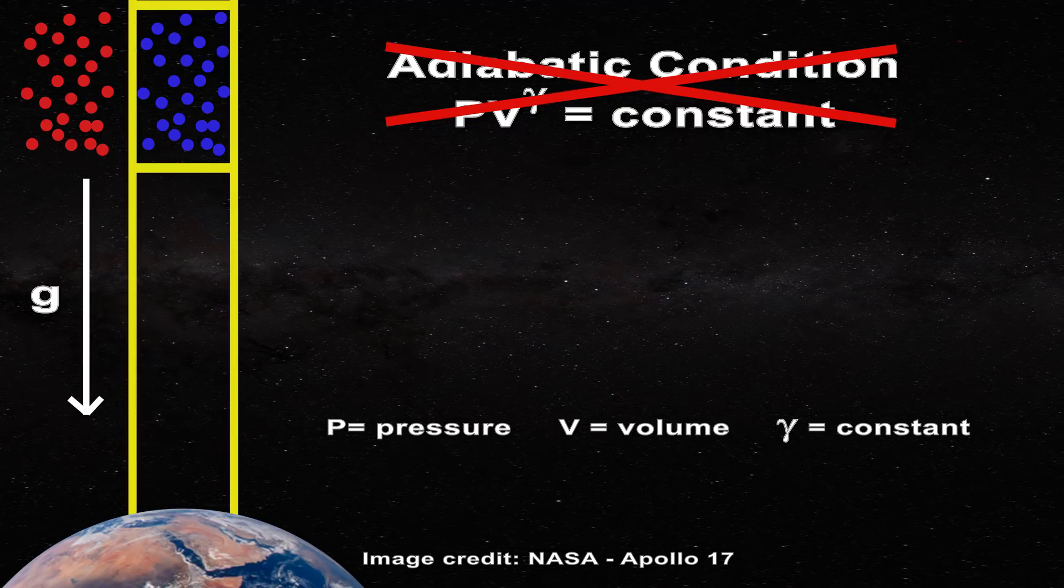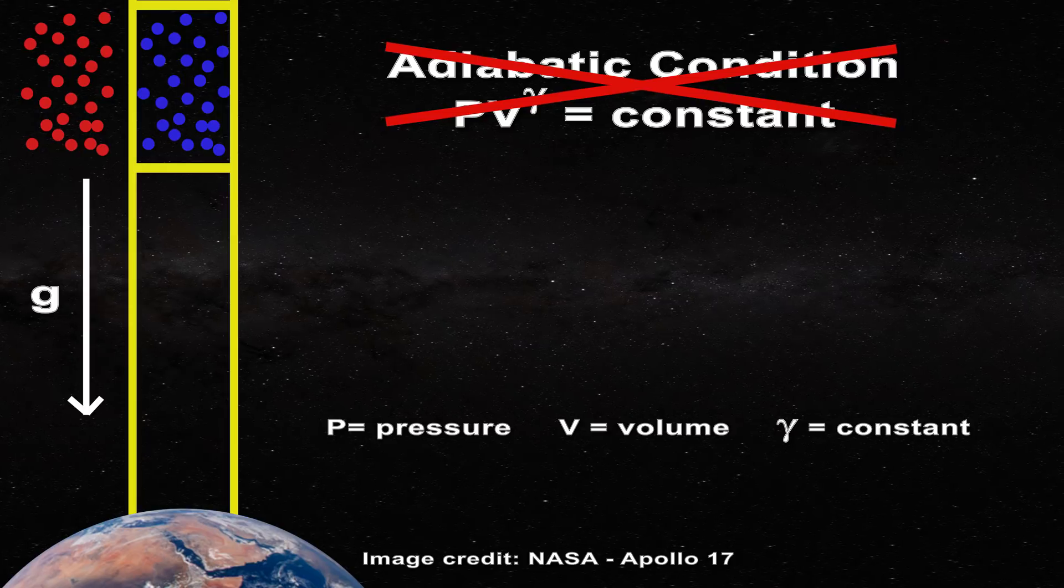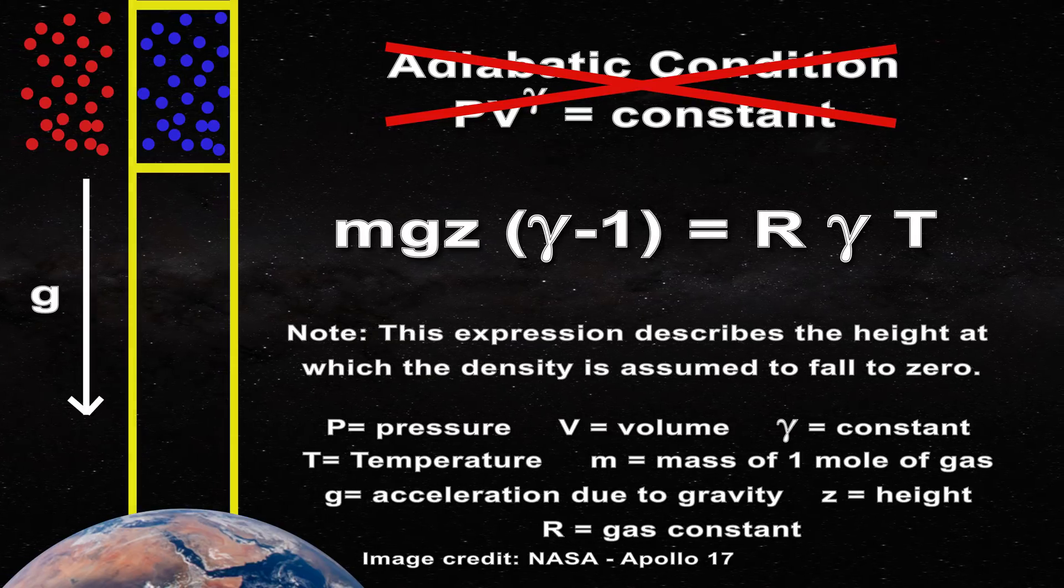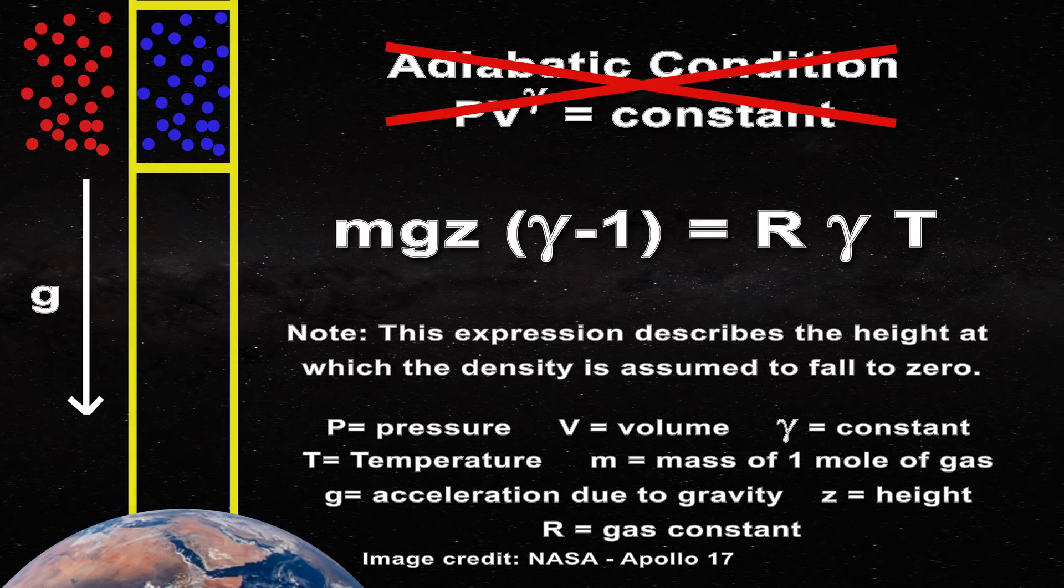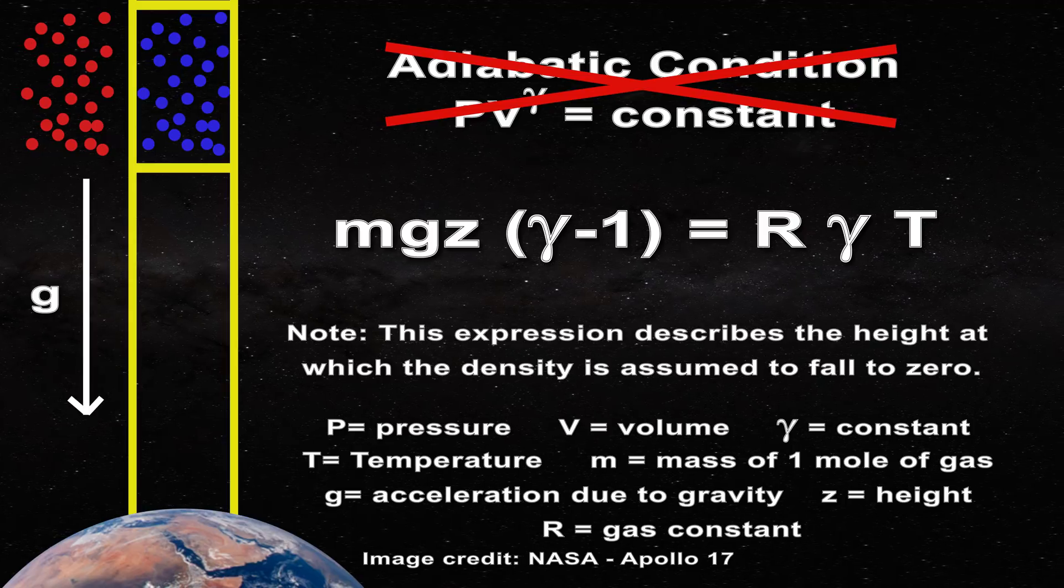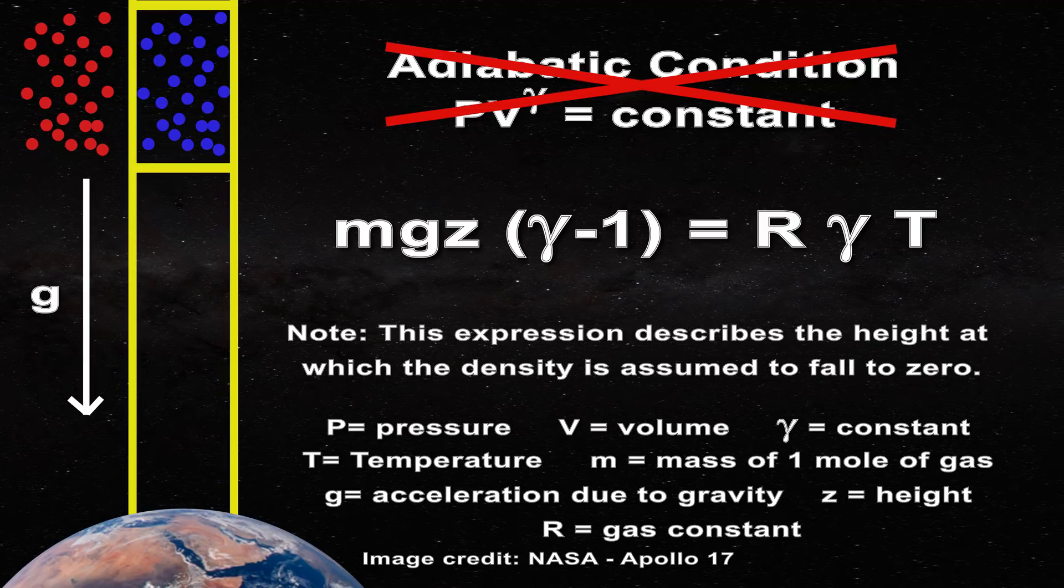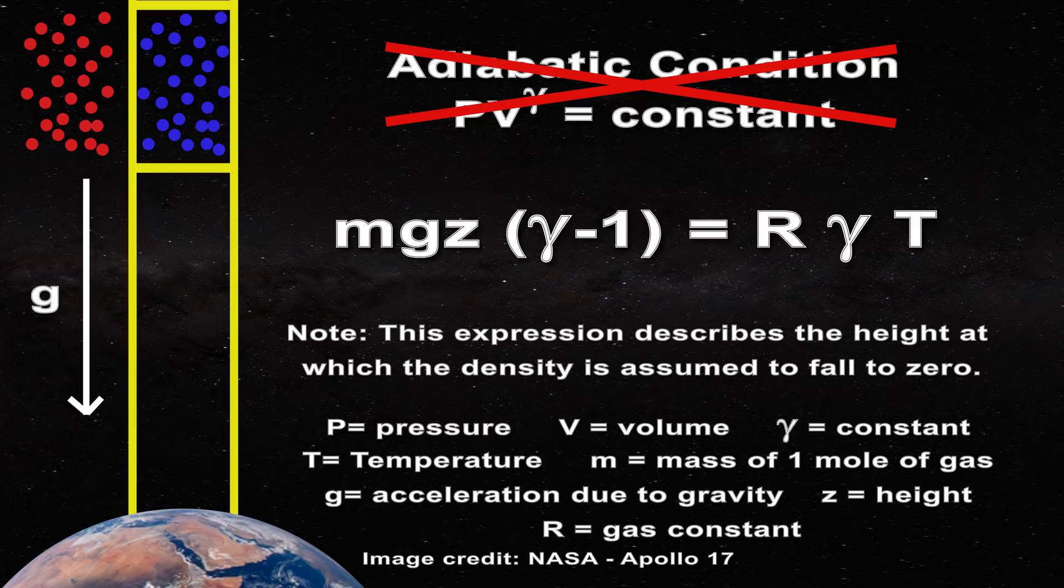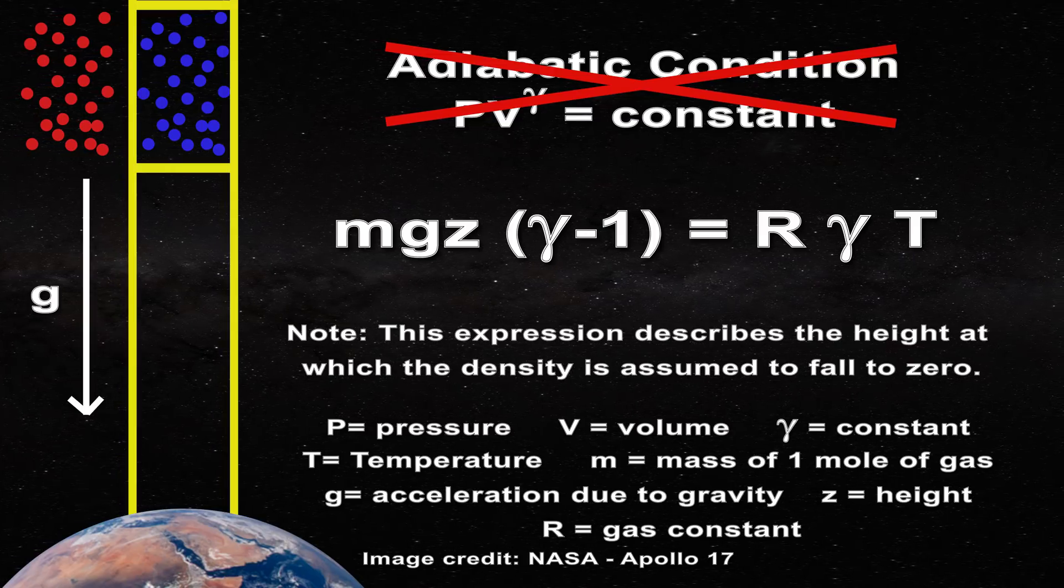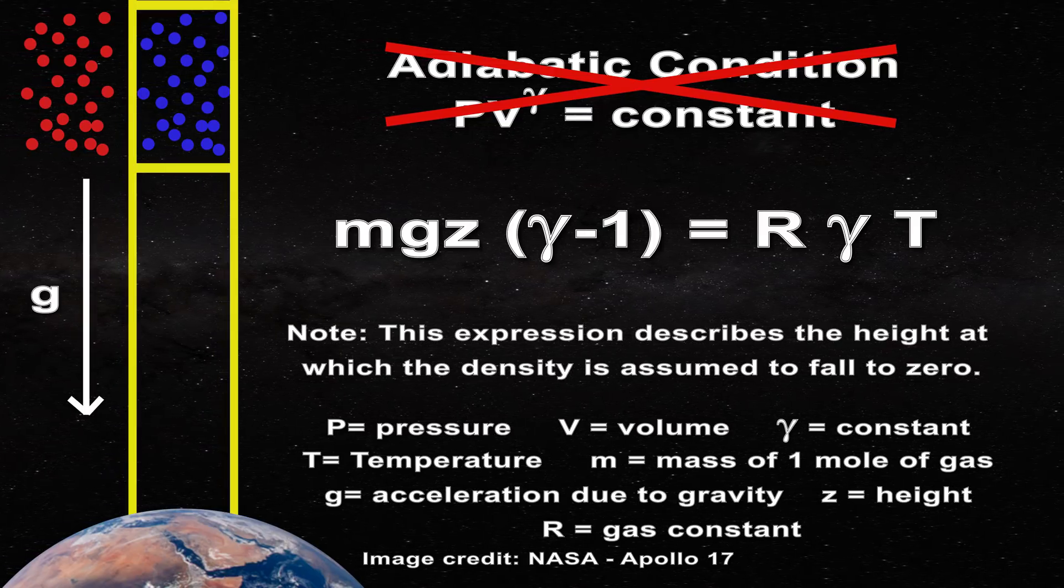What is the result of all this? Well Jeans now obtains this expression for the temperature of the column of air as a function of height. In this equation, T corresponds to temperature, m to the mass of air, g to the acceleration due to gravity, z to the height, R to the universal gas constant, and gamma to a constant.